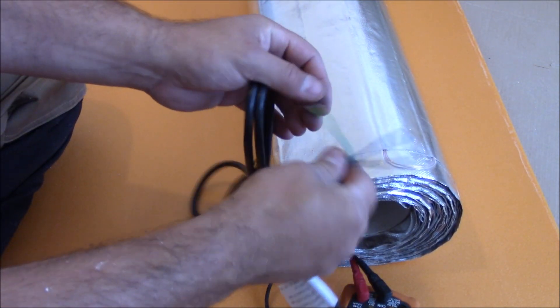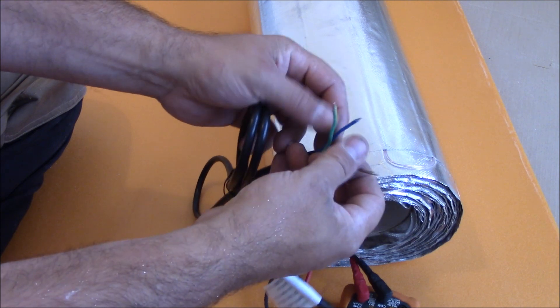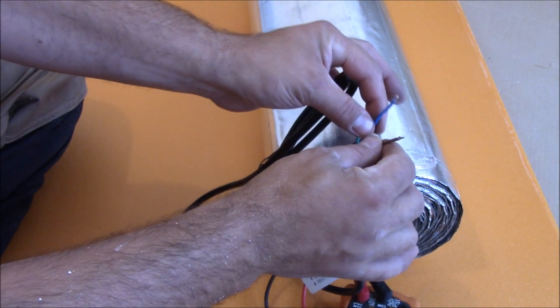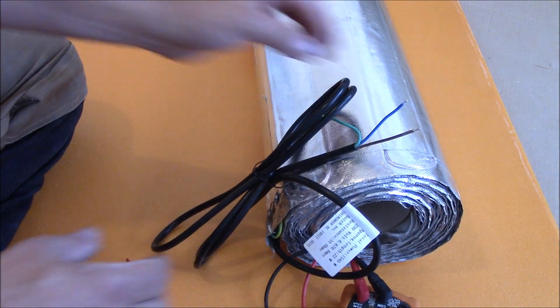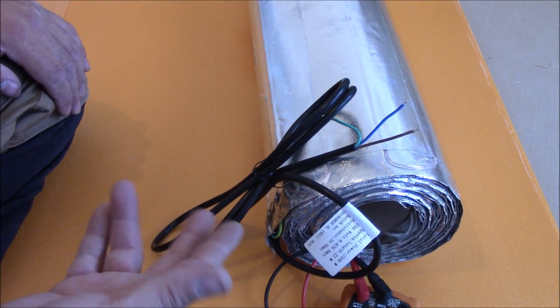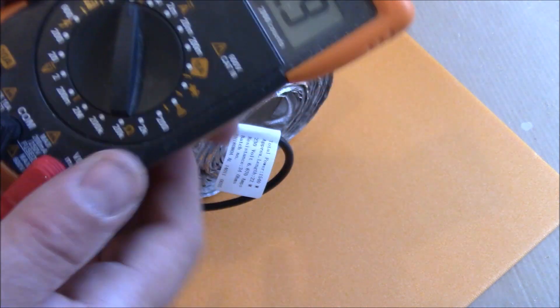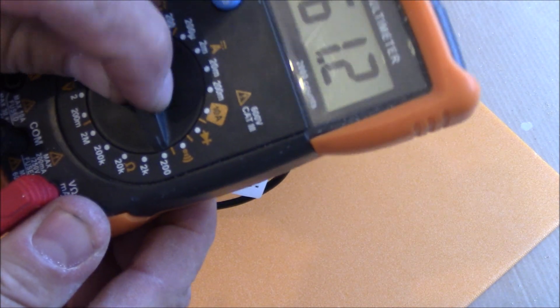And we need to check, there's three wires at the end. So avoid the green and blue one. We need to check just the blue and the brown one. So the neutral and the live.